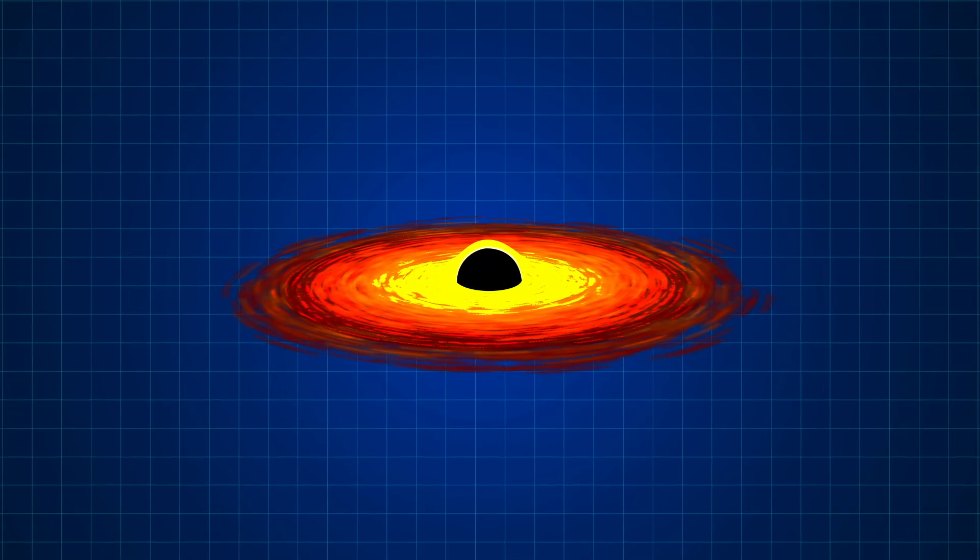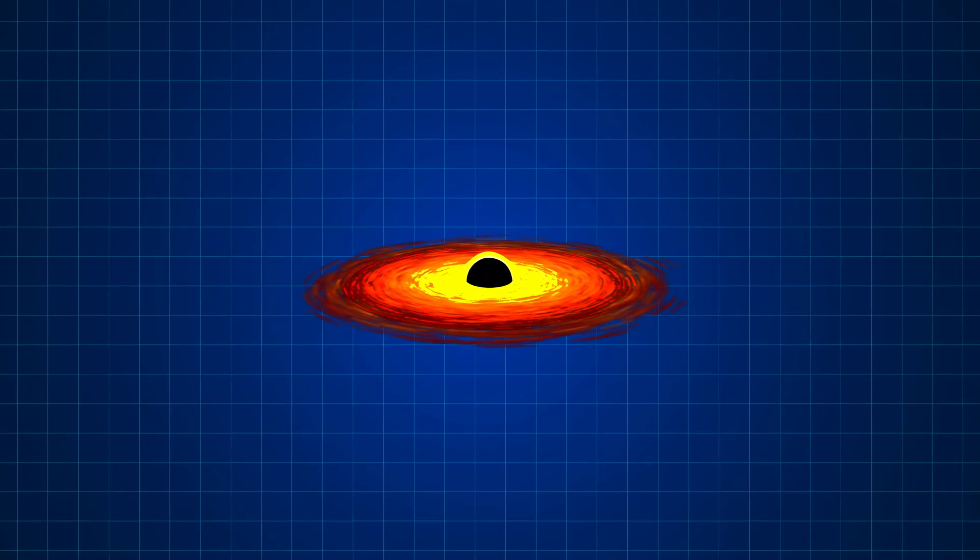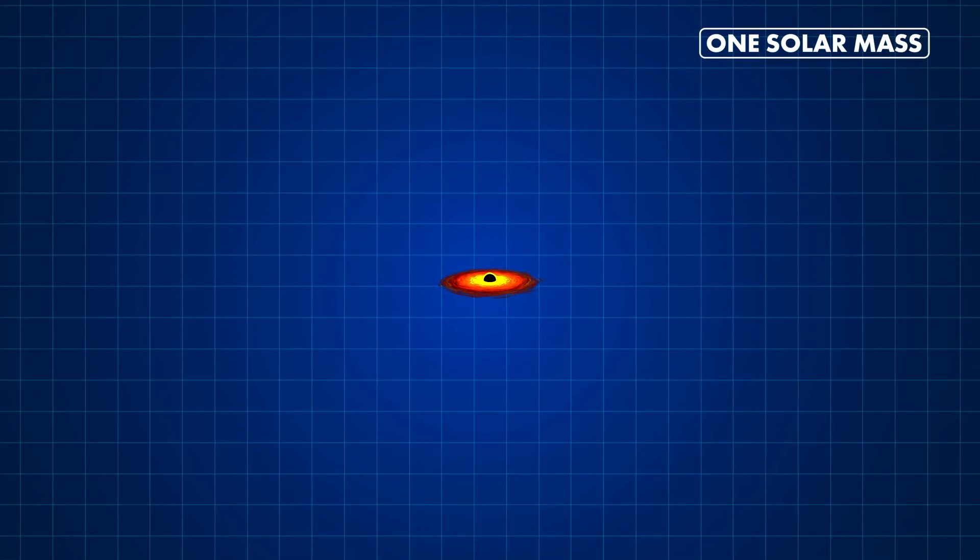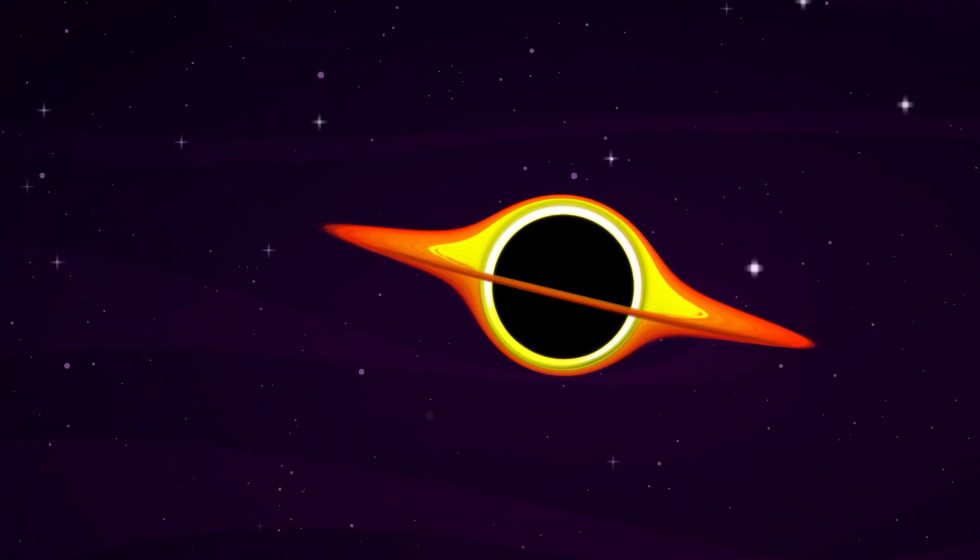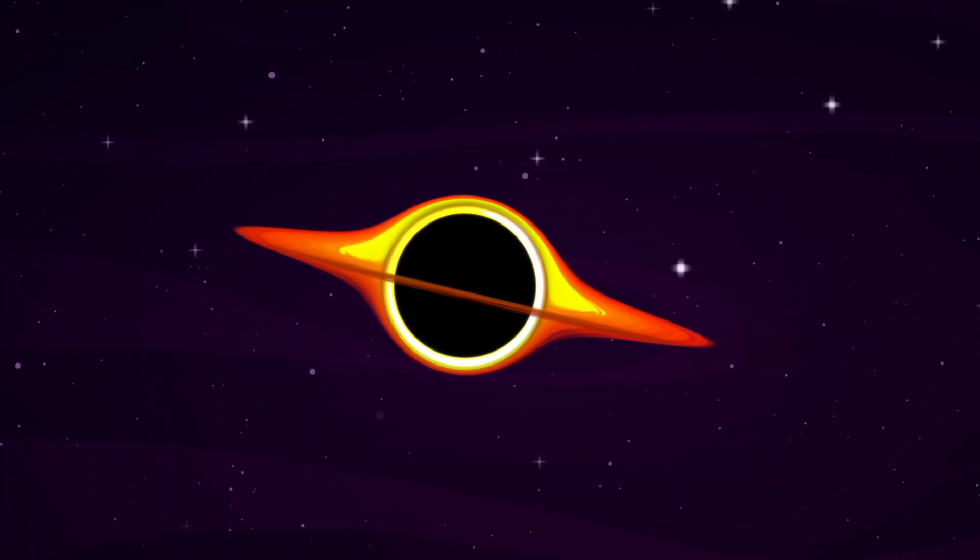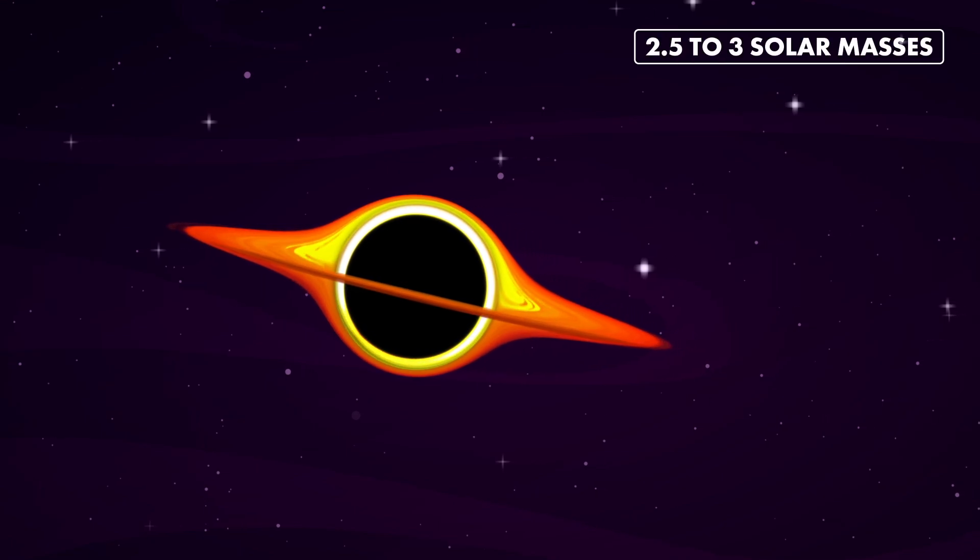Most black holes are many times more massive than the sun, but this hypothetical black hole would just have one solar mass, making it the smallest black hole ever discovered. In reality, the lower limit for the mass of a black hole, once it has finally formed through the evolution of a single star, is around 2.5 to 3 solar masses.